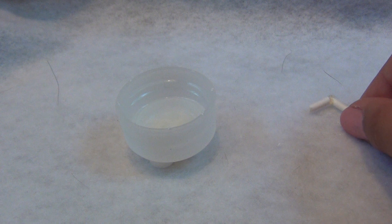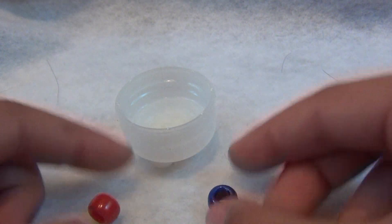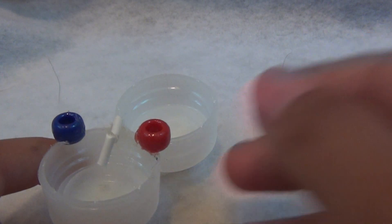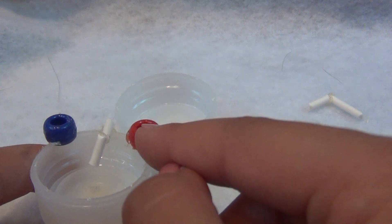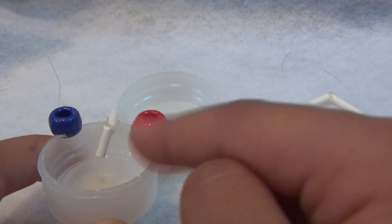Set it aside to let it dry. Then take your red and blue bead and your sink. Usually, sinks have the hot side on the left side and the cool side on the right side.